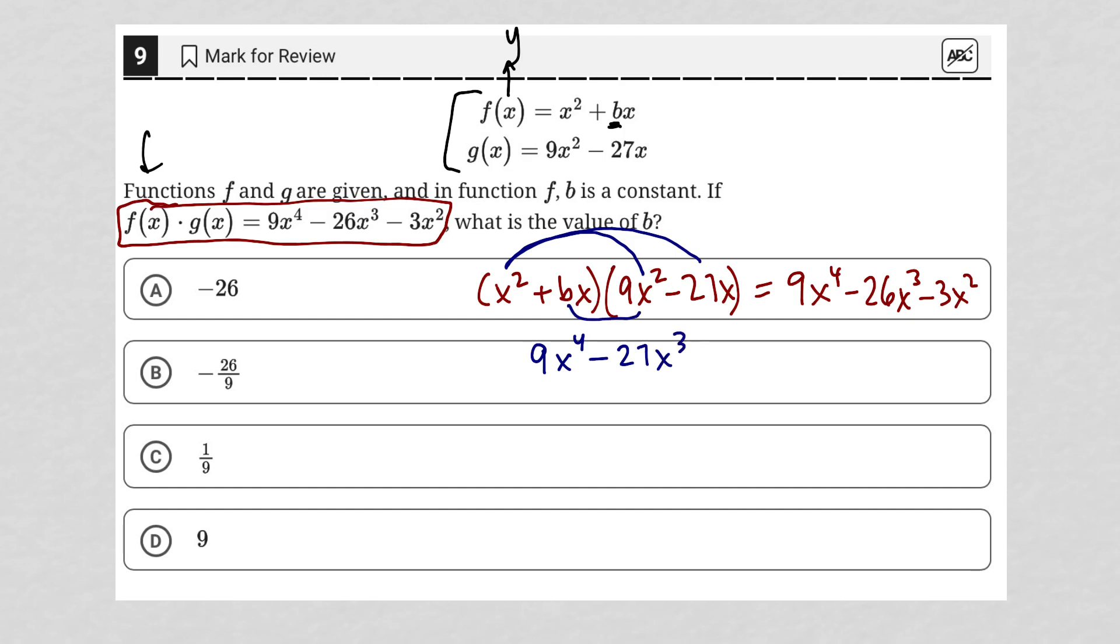Then the inner terms, bx times 9x squared would be a positive 9bx to the third, which I believe is all we're going to need here. I'll continue it, but really this is all that we're going to need. And then last, bx times negative 27x is a minus 27bx squared.